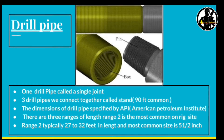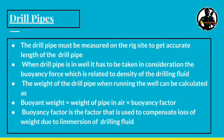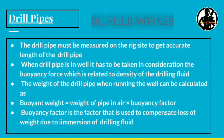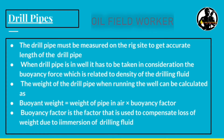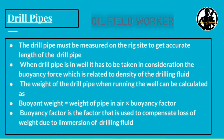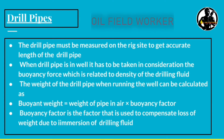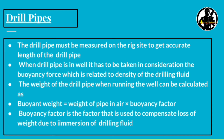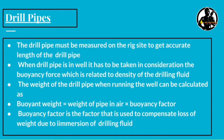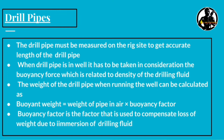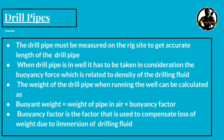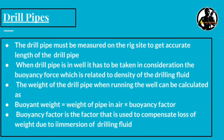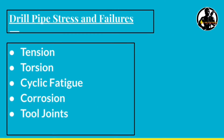The most common pipe size is 5 inches. Drill pipes must be measured on the rig site to get accurate length. When the drill pipe is in the well, the buoyancy force — which is related to the density of drilling fluid — must be taken into consideration. The buoyancy weight equals the weight of the pipe in air multiplied by the buoyancy factor.